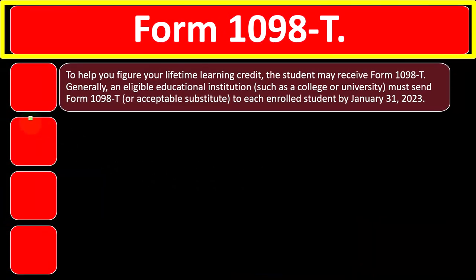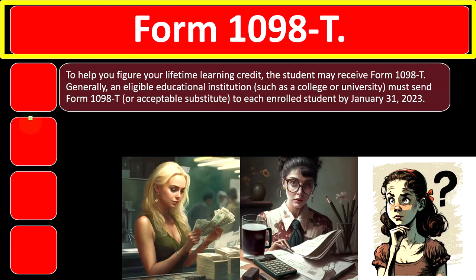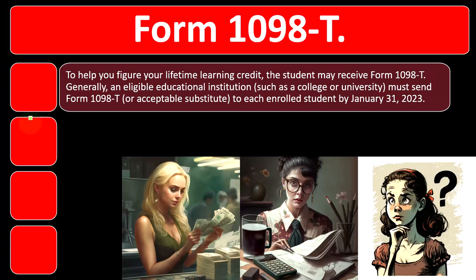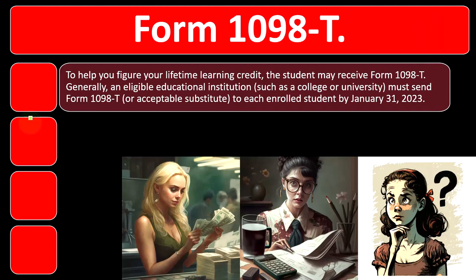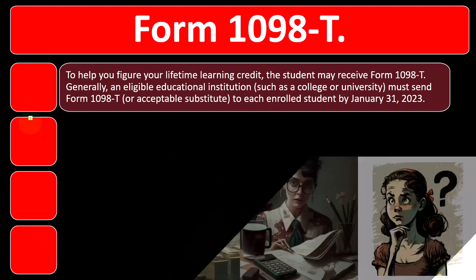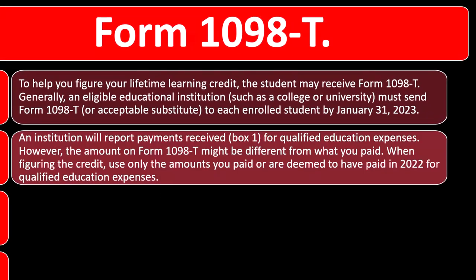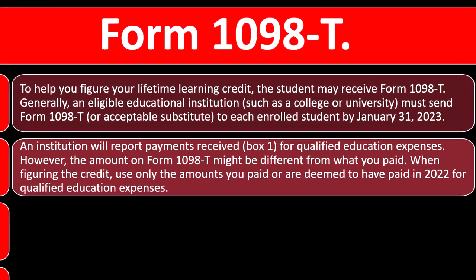Regarding Form 1098-T — to help figure your lifetime learning credit, the student may receive Form 1098-T. Generally, an eligible educational institution such as a college or university must send Form 1098-T, or an acceptable substitute, to each enrolled student by January 31st, 2023. If you don't receive it, contact the college or university. The institution will report payments received in Box 1 for qualified education expenses. However, the amount on Form 1098-T might differ from what you actually paid. When figuring the credit, use only the amounts you paid or are deemed to have paid in 2022 for qualified education expenses.